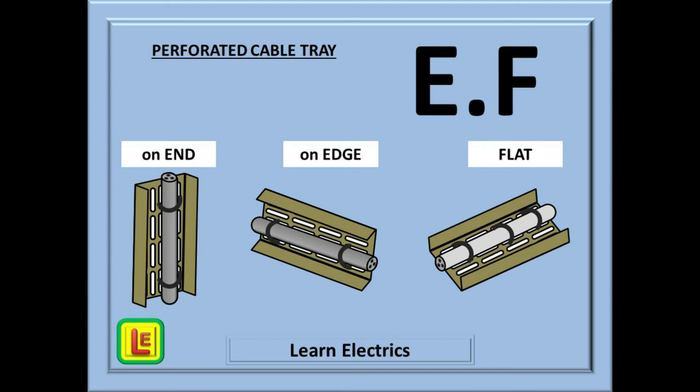E. Moving on to perforated cable trays now. The perforated cable tray can be installed vertically on its end, or it can be installed horizontally on its edge. On its end. On its edge. End and edge both begin with the letter E. Guess what the reference method is? E.